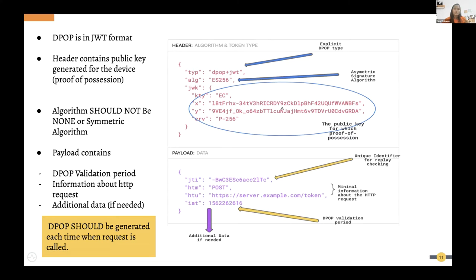In the DPoP JWT header, the type is 'dpop+jwt' rather than the normal 'jwt' type. The algorithm used to sign the JWT must always be present and must be an asymmetric signature algorithm — symmetric algorithms or 'none' are not permitted. The client's public key is also included in the header to identify the owner of this proof.